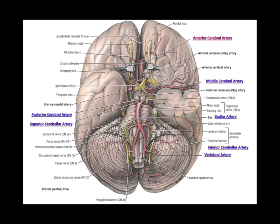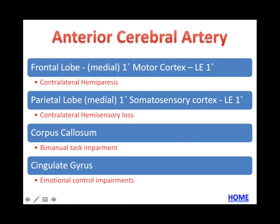We see the Circle of Willis embedded in the brain, and if we click on the anterior cerebral artery it takes us to a slide that reminds us what regions of the brain are impacted: the frontal lobe, parietal lobe, corpus callosum, and cingulate gyrus. This PowerPoint also goes deeper and discusses the primary symptoms a person would have with an ischemic stroke of the anterior cerebral artery.